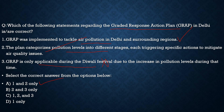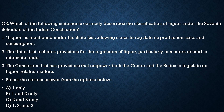The next question asks: Which of the following statements correctly describes the classification of liquor under the Seventh Schedule of the Indian Constitution? Statement 1 — Liquor is mentioned under the State List, allowing states to regulate its production, sale and consumption: 100% correct. Statement 2 — The Union List includes provisions for regulation of liquor, particularly in matters related to interstate trade: totally incorrect. Statement 3 — The Concurrent List has provisions empowering both Centre and States to legislate liquor-related matters: totally incorrect. The correct statement is Statement 1 only.